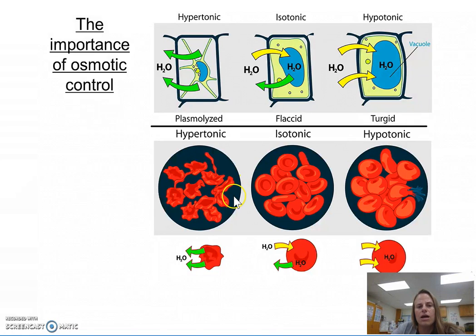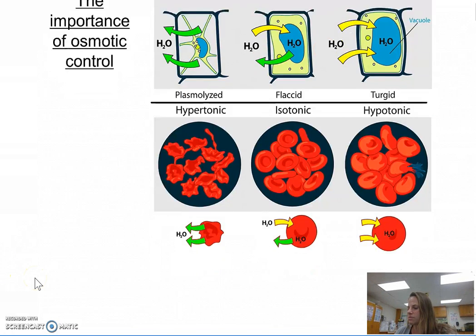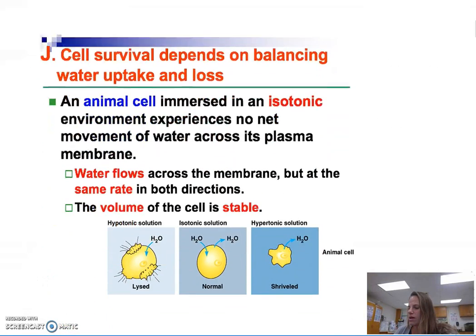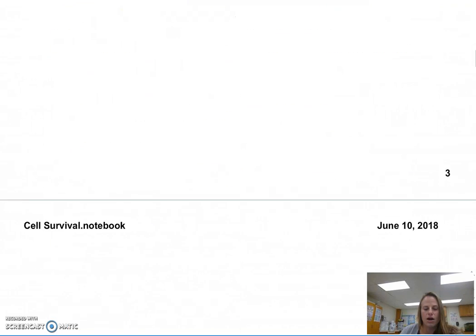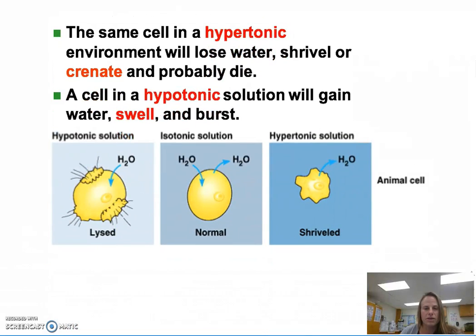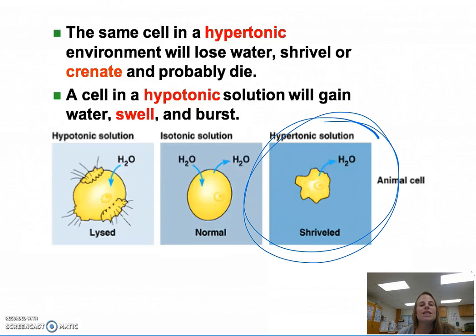Not only is osmotic control important for animals like humans, but it's also very important for plants. Cell survival depends on a balancing act where you want an animal cell to remain in an isotonic environment, where water is flowing at the same rate in both directions so that the volume of the cell is stable. Otherwise, if an animal cell is in a hypertonic situation, the cell is going to shrivel — it's going to crenate.